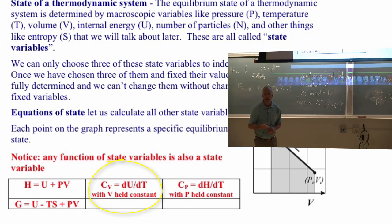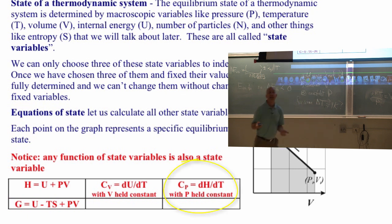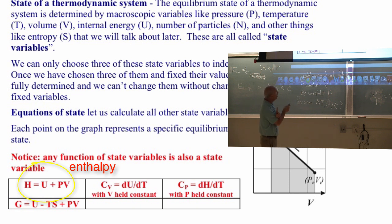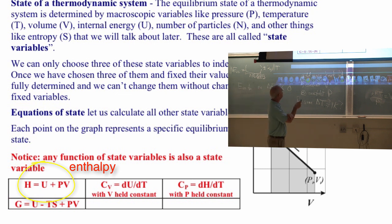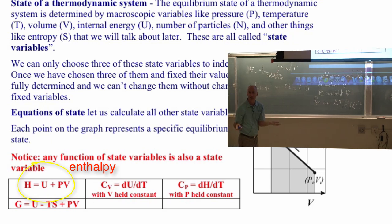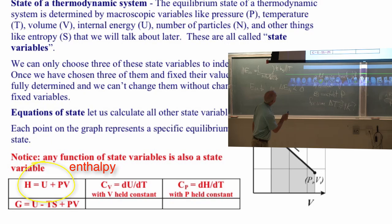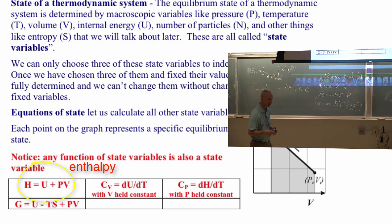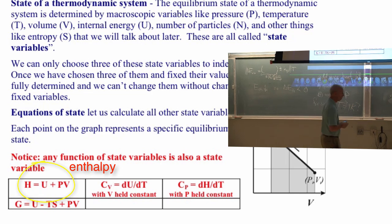Heat capacity at constant volume is a state variable — the air in this room right now has only one value of it. There's only one value of heat capacity at constant pressure as well. This H is called enthalpy: if I take the internal energy U (one state variable) and add pressure times volume (two more state variables), I get enthalpy. Pressure times volume has the same units as energy, so that addition is sensible. Enthalpy turns out to be a really useful state variable — one you've probably seen before and that we've used earlier in the year.